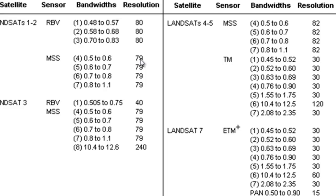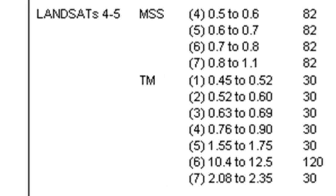Then in 1982, with the launch of Landsat 4, we have the Landsat Thematic Mapper, which was a much higher spatial, spectral, and radiometric resolution sensor. The pixel size was 30-meter pixels, except for the thermal band, which was 120-meter pixels.